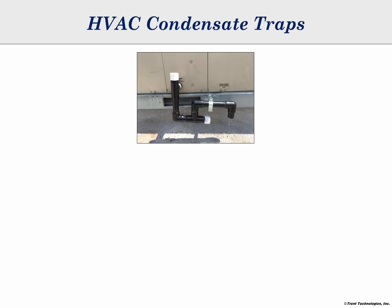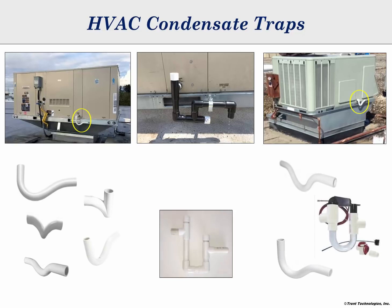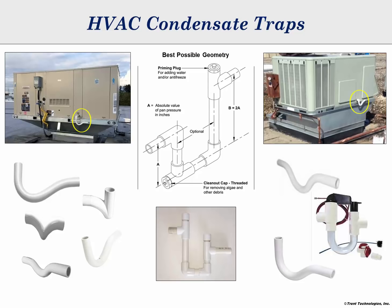Condensate traps for HVAC drain systems in all shapes and sizes are available from supply houses and field fabricators with little or no knowledge of pressure conditions and condensate flow rates. This chart shows some of the types of traps available. Some are more prone to failure than others, but all, including the best possible geometry, are subject to failure as a result of frequent empty operation or flow blockage.